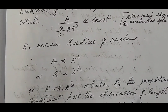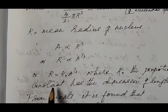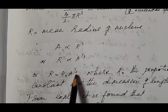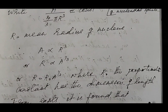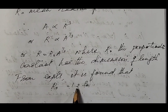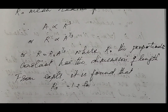From this, r is proportional to A raised to 1/3, or r equals R₀ times A raised to 1/3, where R₀ is the proportionality constant with the dimension of length. From experiments, it is found that R₀ equals 1.2 fermi, where 1 fermi equals 10 raised to minus 15 meters. So we can express the radius of any nucleus as r equals R₀ times A raised to 1/3, where A is the number of nucleons in the nucleus.